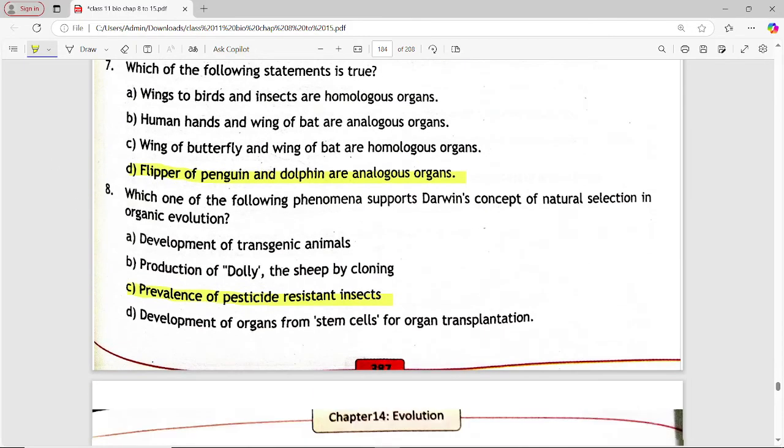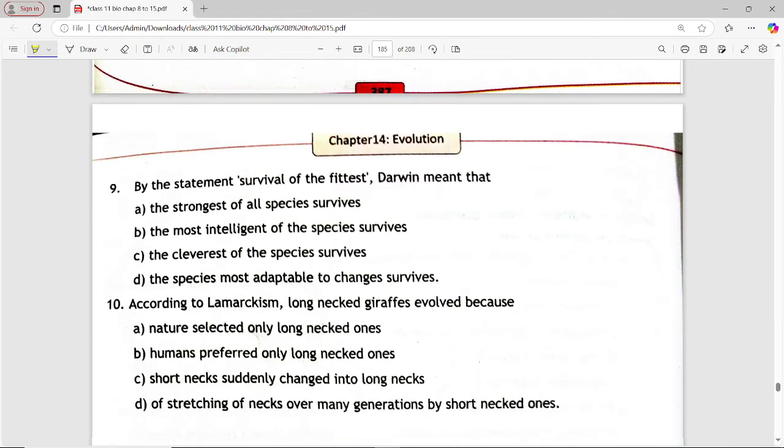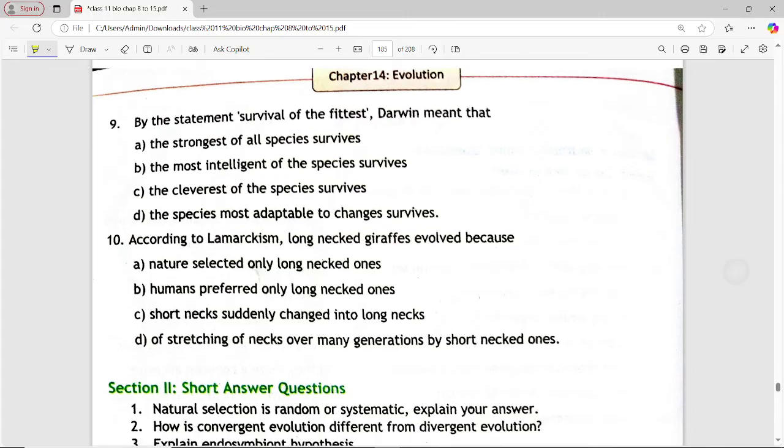Next MCQ is, by the statement survival of the fittest, darwin meant that. Options are, the strongest of all species survive, the most intelligent of the species survive, the cleverest of the species survive, the species most adaptable to changes survive. Answer is option D, the species most adaptable to changes survive.